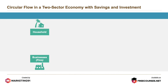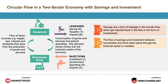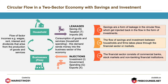Next is circular flow in a two-sector economy with savings and investments. Savings are a form of leakage in the circular flow, which get injected back in the flow in the form of investments. The flow of savings and investments between households and firms takes place through the financial sector or markets. The financial sector consists of commercial banks, stock markets, and non-banking financial institutions.